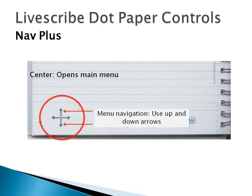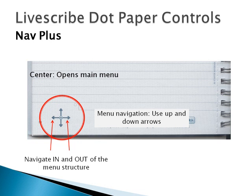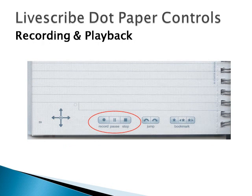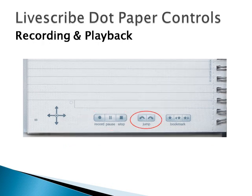Navigating the main menu is as simple as touching the up and down arrows, and the left and right arrows to move in and out of the menu structure. Record, pause, and stop will control the audio functions of the pen, and jump will move forward and back 10 seconds in the recording.